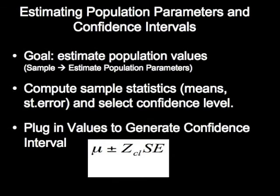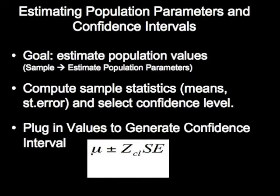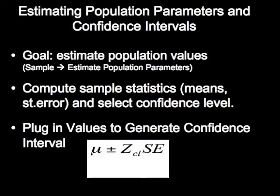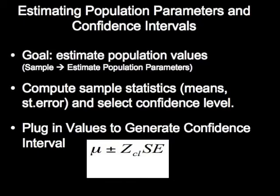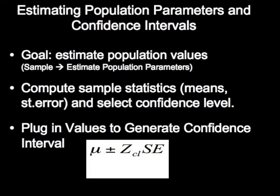the average drug dealer makes $30,000 a year, give or take $5,000 a year. And if we say something like we're 95% confident that the average drug dealer makes $30,000 a year plus or minus $5,000,